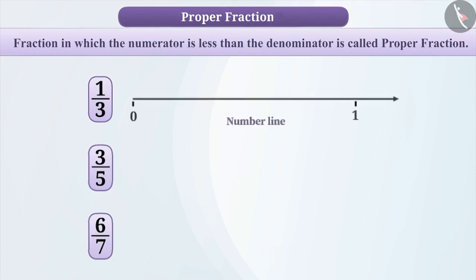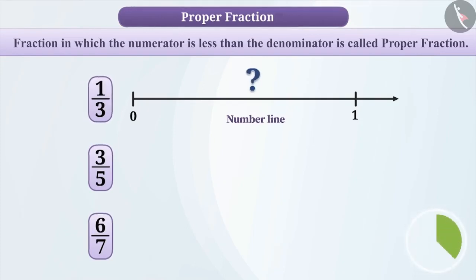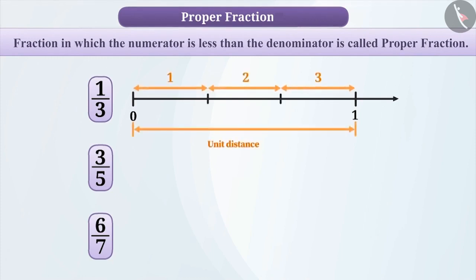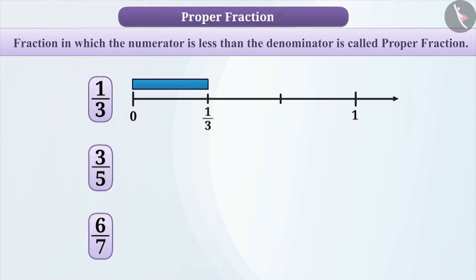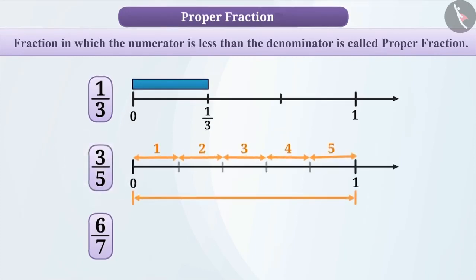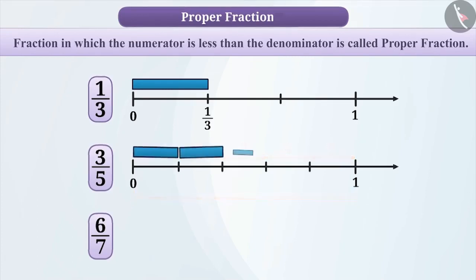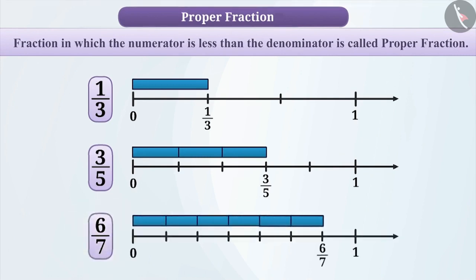Let's represent them on a number line. To represent 1 by 3 on the number line, we will divide the unit length into three equal parts and take one part of it as 1 by 3. Similarly, for 3 by 5, we will divide the unit length into five equal parts and take three parts of it as 3 by 5. Similarly, we can also express 6 by 7 on the number line.